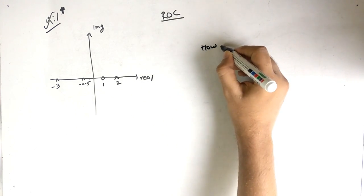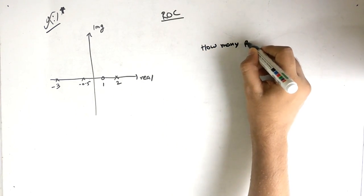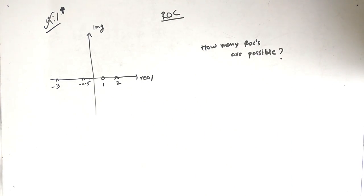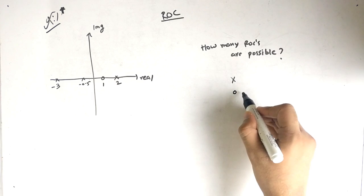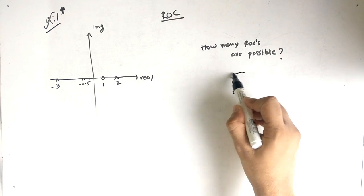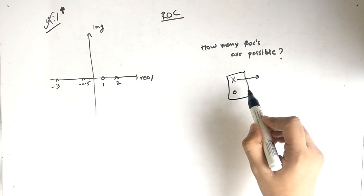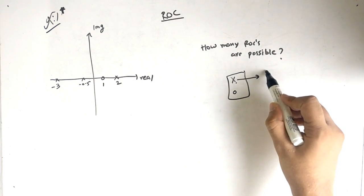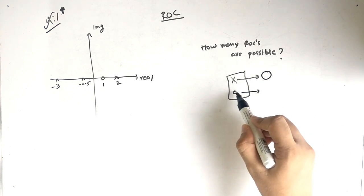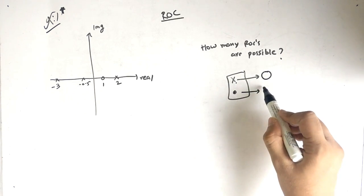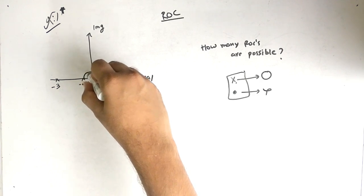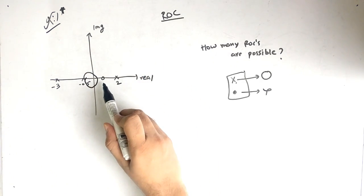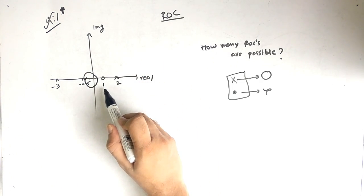To find the ROCs, we have to draw the circles. Note that circles are drawn from the pole side and not from the zero side. This is the important point: from the poles (marked as X) we will draw the circle, but from the zeros we will not draw the circle.